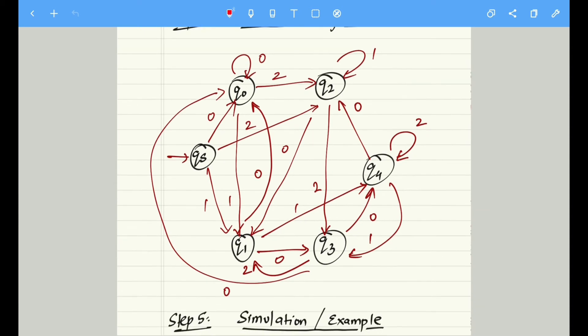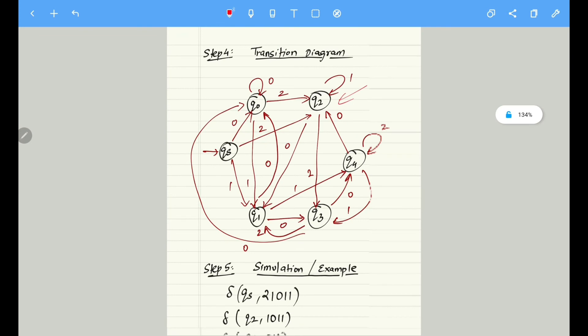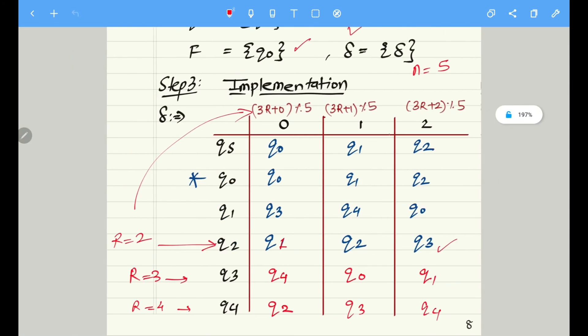You simply need to go row by row, input by input, and then create this transition diagram. That is, let me consider this Q2 state. Q2 on input 1 remains in Q2. Q2 on input 2 goes to Q3, and Q2 on input 0 goes to Q1. That is what we have seen in the table. Let me go back to the table - Q2 on input 1 goes to Q2 only. Q2 on input 0 goes to Q1, and Q2 on input 2 goes to Q3.